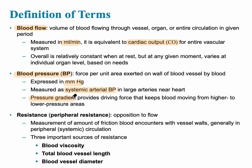Peripheral resistance — also called afterload — is the opposition to flow that blood must overcome, measured as the friction blood encounters with vessel walls. Factors that increase resistance include blood viscosity, total blood vessel length, and blood vessel diameter. Each additional pound of body mass requires more blood vessels, increasing vessel length and therefore peripheral resistance.